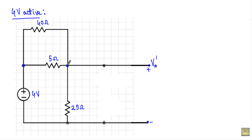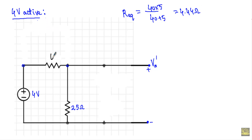VA prime will be the voltage across the 25 Ω resistor. With respect to those terminals, the 5 Ω and the 40 Ω resistances are connected in parallel, so I can replace them with their equivalent resistance: R_equivalent = (40 × 5) / (40 + 5) = 4.44 Ω. The 4-volt source supplies current in a direction such that this side of the 25 Ω resistor is positive and the other is negative, so VA prime will be positive.